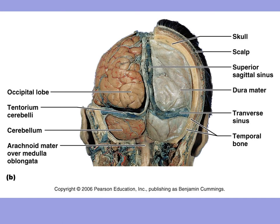This view on a cadaver shows the occipital lobe. The whitish covering here is the dura mater that has not been removed yet. On this side, the meningeal layer has been removed, showing the occipital lobe of the cerebrum and the cerebellum below. Down here you can still see the arachnoid mater over the medulla oblongata and the spinal cord being connected below.